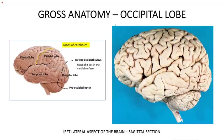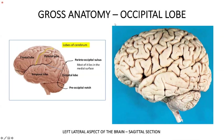Starting with anatomy: the visual cortex is part of our occipital lobe, which is the smallest of the four lobes of the cerebral hemisphere. Looking at the lateral surface, the occipital lobe is separated from the parietal and temporal lobes anteriorly by an imaginary vertical line running from the pre-occipital notch below to the parieto-occipital sulcus superiorly. Posteriorly, the occipital lobe is bounded by the occipital bone, and inferiorly it rests on the tentorium cerebelli.